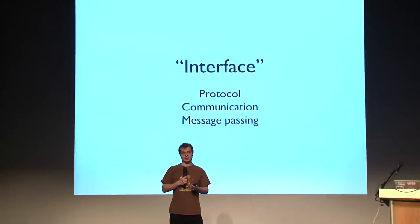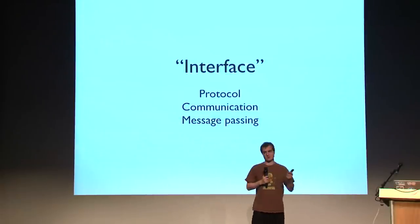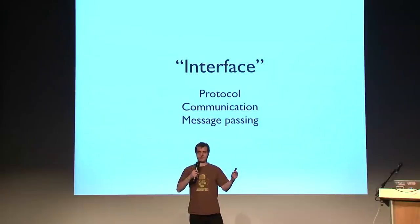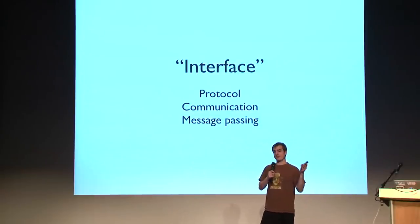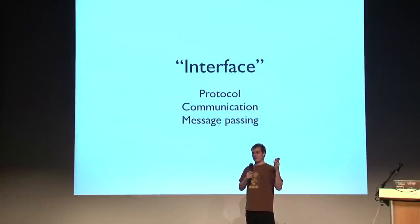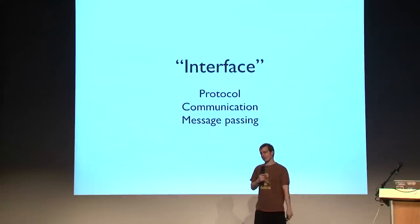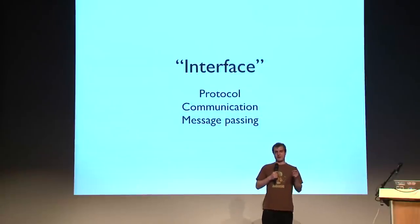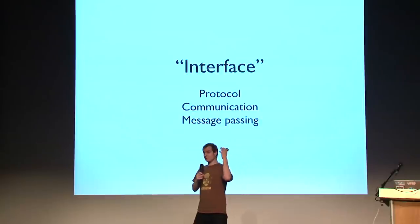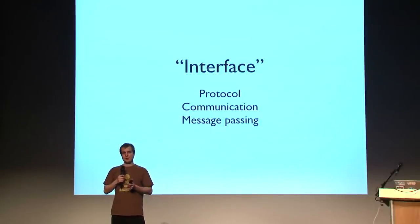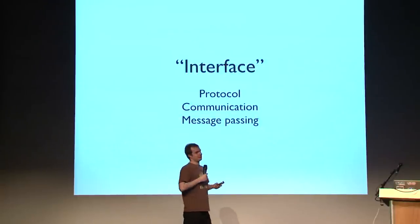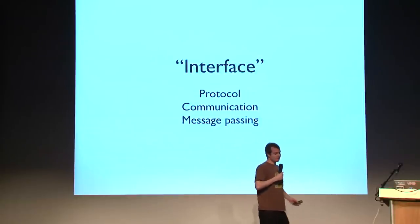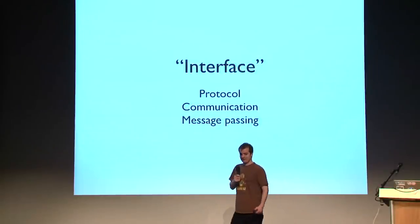A different word for interface would be 'protocol.' A protocol defines rules for communication — it defines which types of messages can be exchanged between two parties, which could be two objects in a system or two nodes in a network. So an interface in object-oriented programming is really about communication, about objects that exchange messages. That's how I want you to think about what an interface is: it's about message passing.